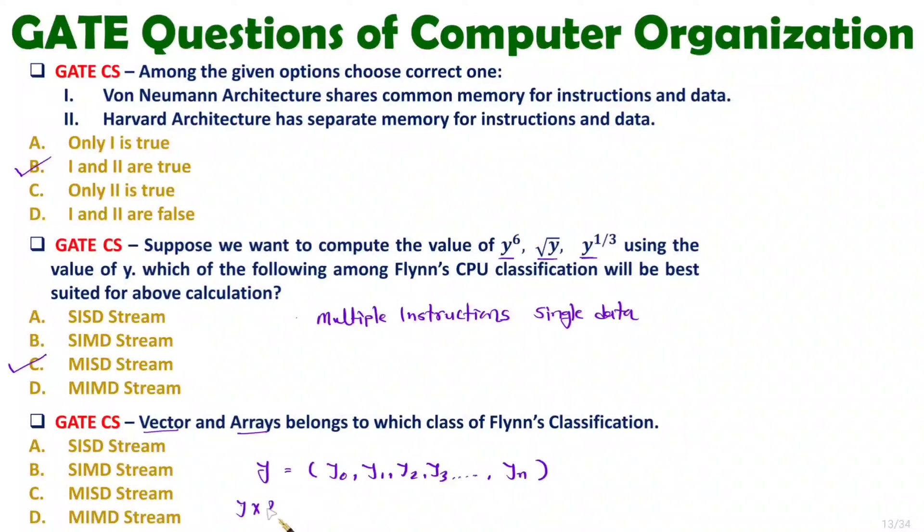But instruction will be one only. So what it means here you will be having single instruction and we are having multiple data. So here you can have single instruction multiple data stream type of computer with Flynn's classification. So that is how things are there.